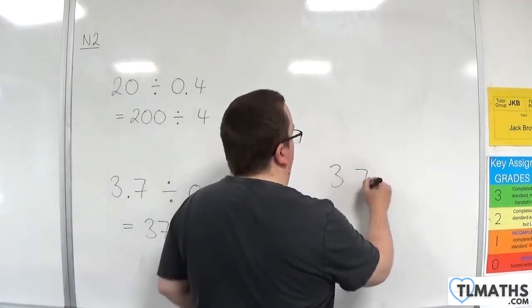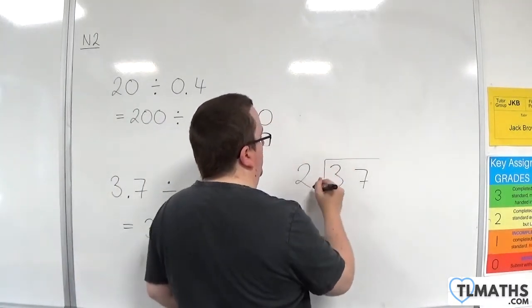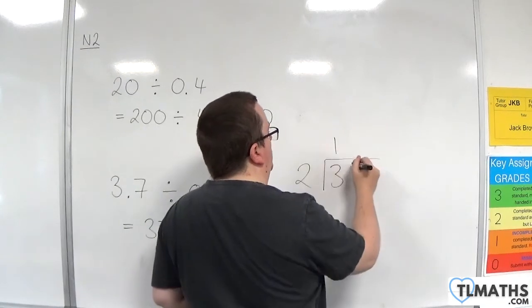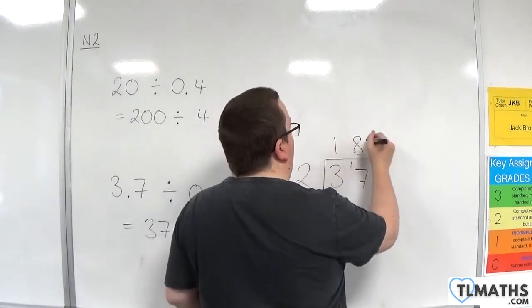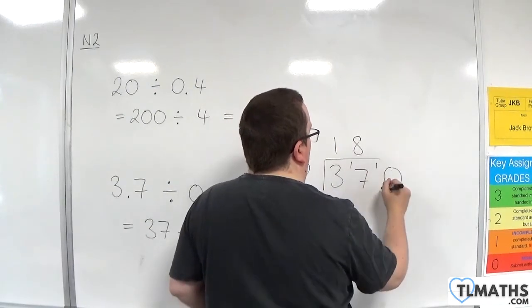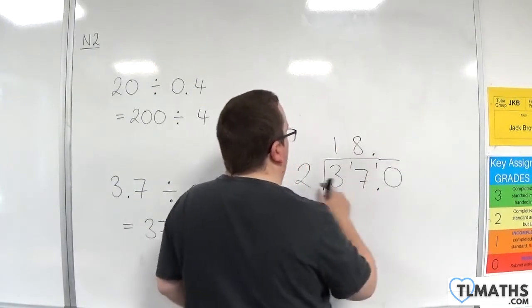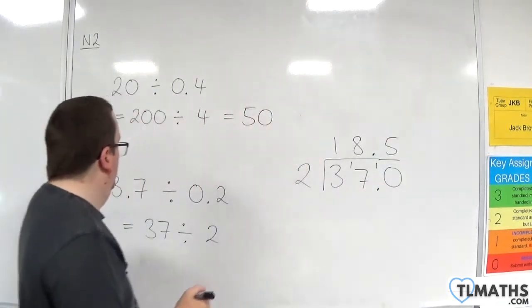37 divided by 2. 2s into 3 go 1 with 1 left over. 2s into 17 go 8 with 1 left over. Bring in the 0 and decimal point. 2s into 10 go 5. So that means that 3.7 divided by 0.2 is 18.5.